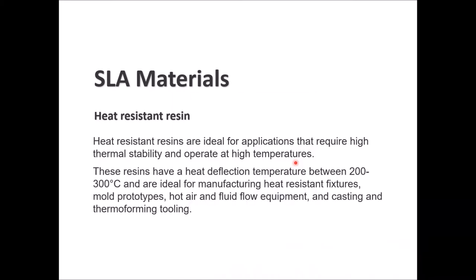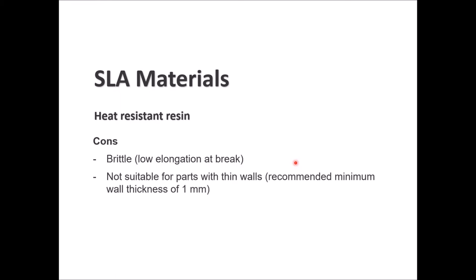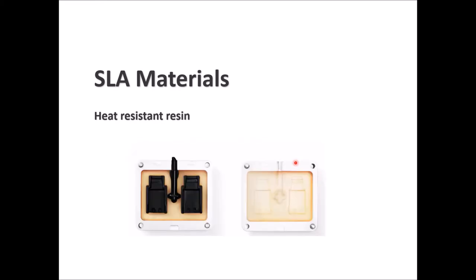Heat resistant resins are very good for applications requiring high thermal stability and operation at high temperatures. They have a heat deflection temperature between 200 and 300 degrees Celsius and are used for heat resistance fixtures, mold prototypes, hot air and fluid flow equipment, and casting and thermal forming tooling. Good sides: high heat deflection temperature and smooth surface finish. Bad sides: brittle and not suitable for parts with thin walls under 1 mm.